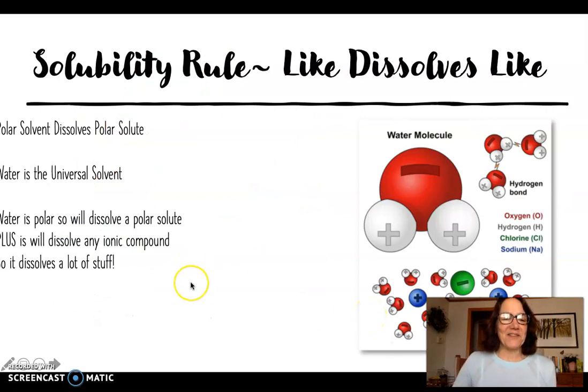I'm going to keep going here because we have to quickly cover the solubility rule. This is going back to look at the polarity of the water molecule. The solubility rule is like dissolves like. I have to have my solute and my solvent have like characteristics, and it's their polarity that we're talking about. A polar solvent will dissolve a polar solute, and a nonpolar solvent will dissolve a nonpolar solute. We call water the universal solvent because not only will it dissolve another polar substance, but it will also dissolve all ionic compounds, all salts.